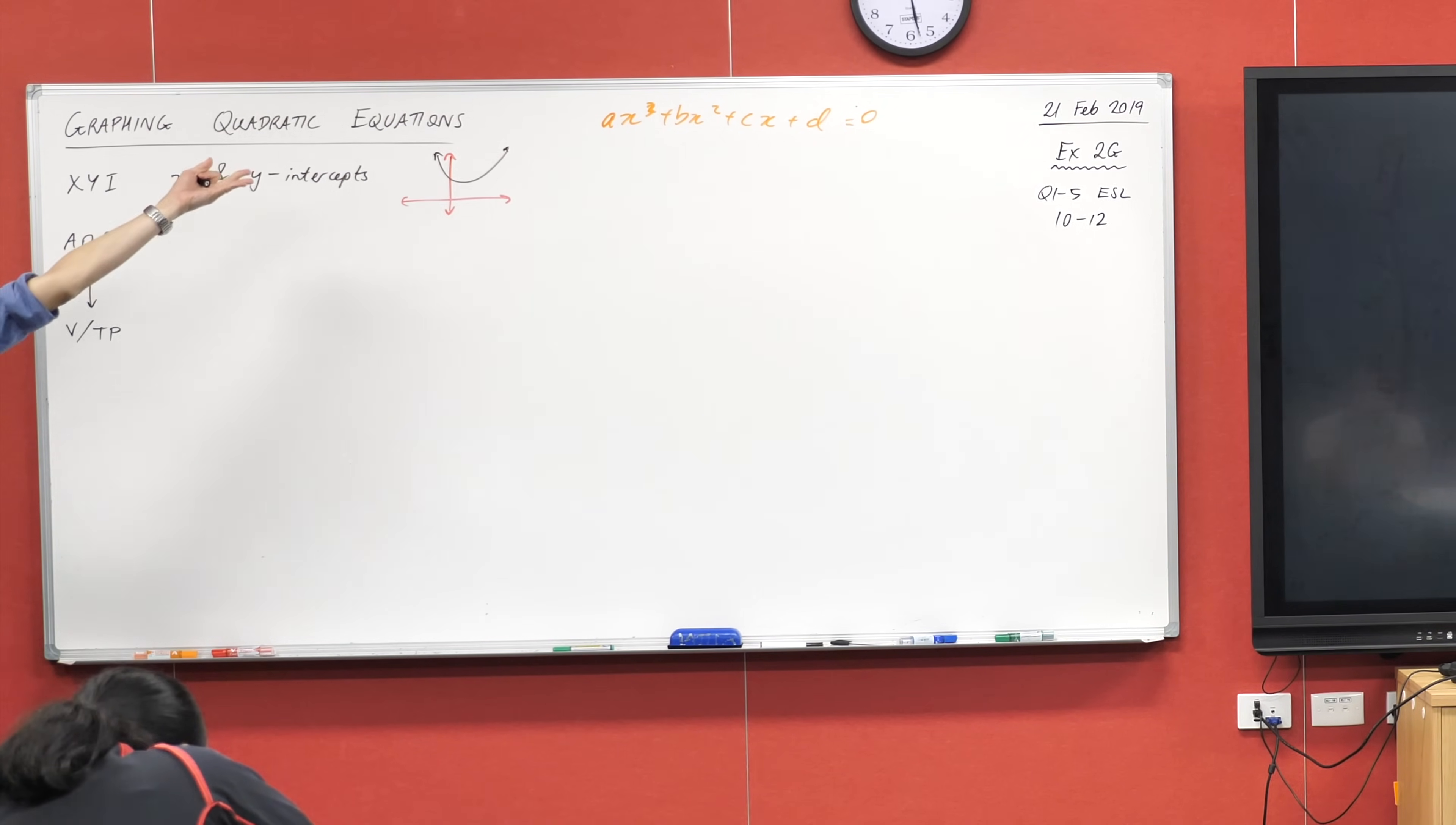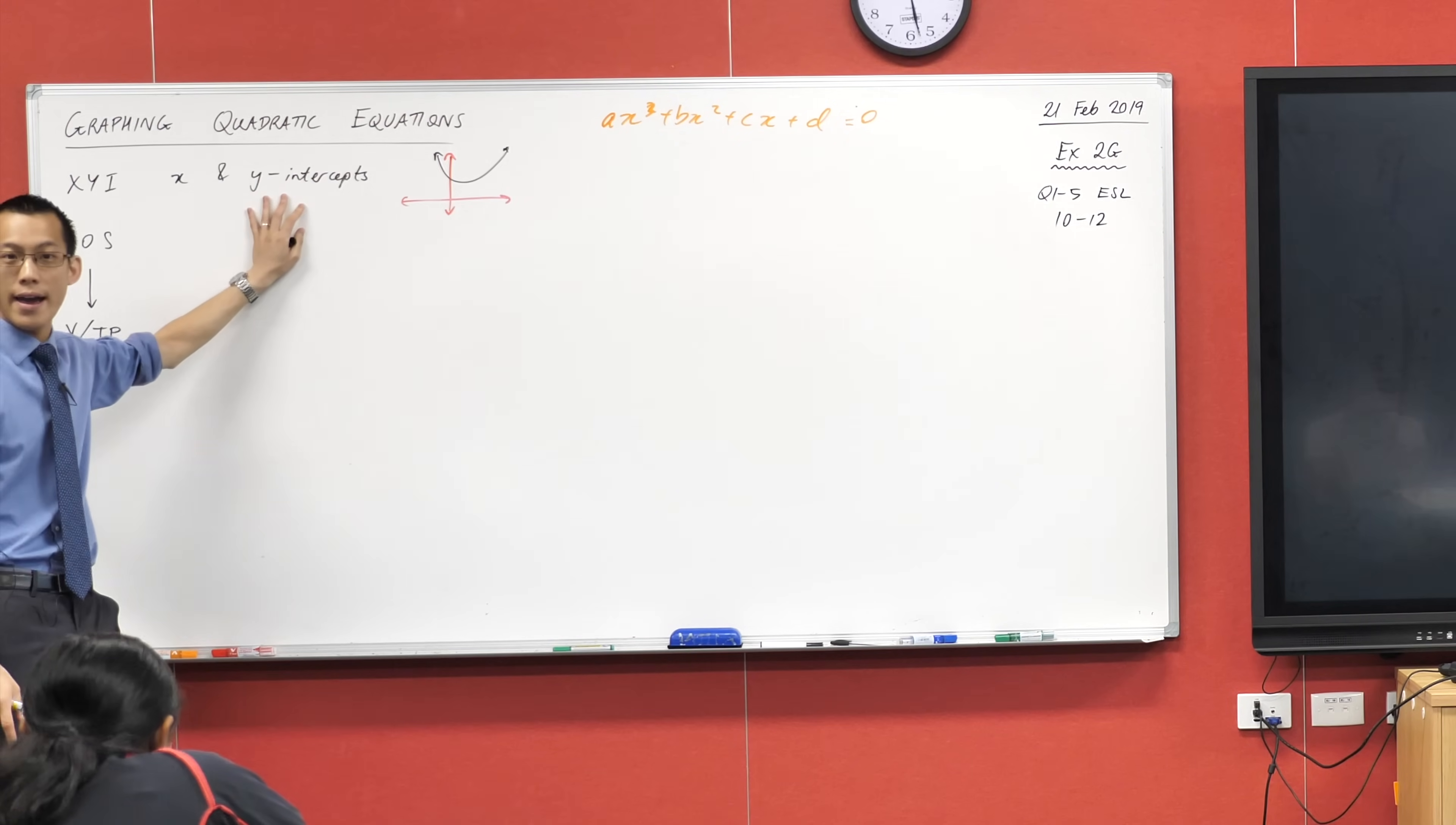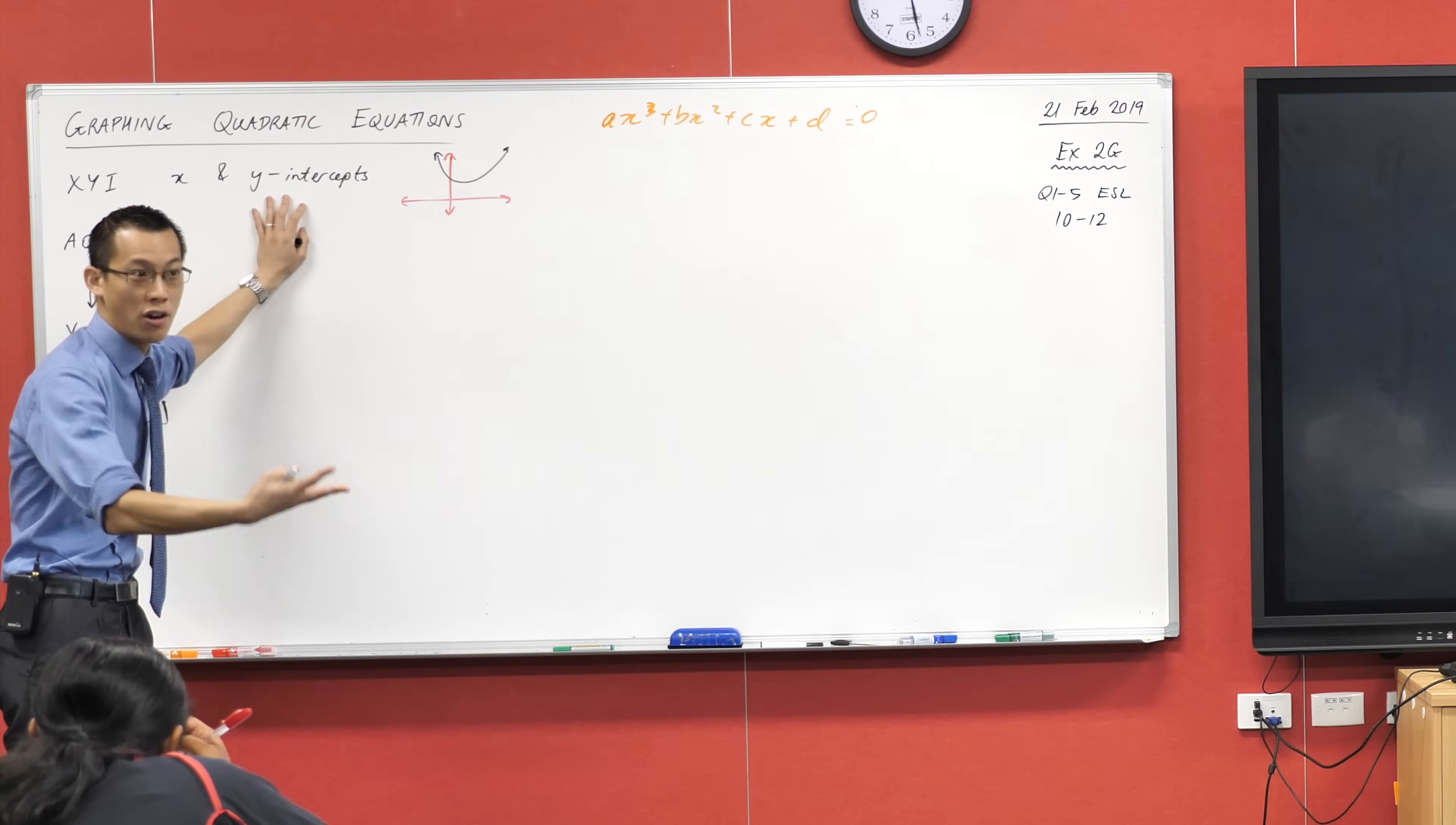Now how many x-intercepts does this graph have? None! So you're like, uh oh. By the way, fun fact, you will always get a y-intercept, always. You can't not have a y-intercept.